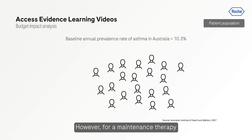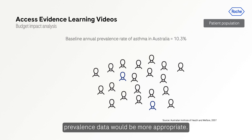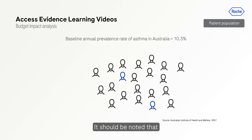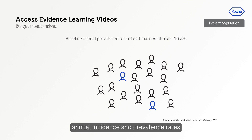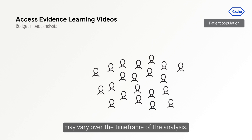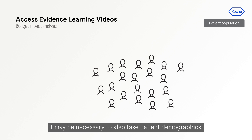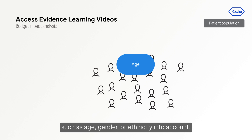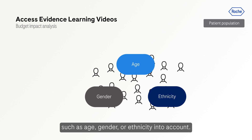However, for a maintenance therapy in a chronic condition, for example asthma, prevalence data would be more appropriate. It should be noted that annual incidence and prevalence rates may vary over the time frame of the analysis. Depending on the disease and treatment considered, it may be necessary to also take patient demographics such as age, gender, or ethnicity into account.